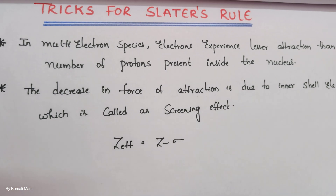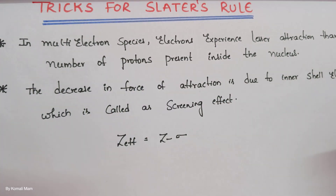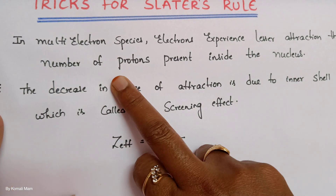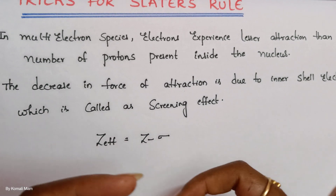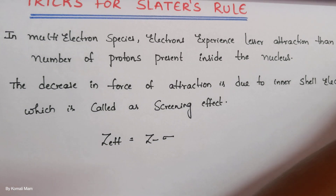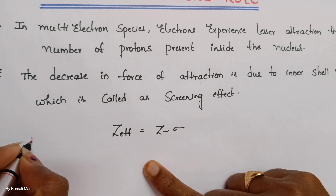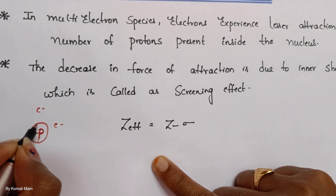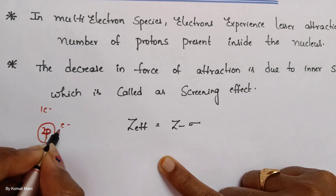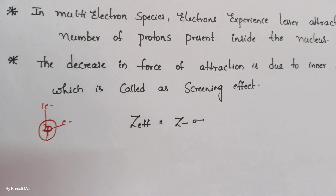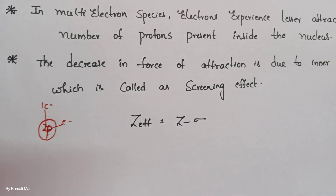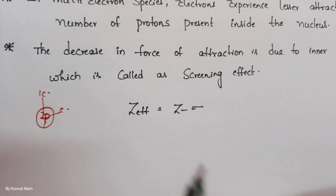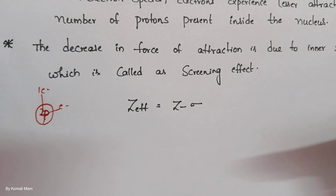What is Slater's rule? When a multi-electron species is present — having more number of electrons — what happens is that electrons experience less attraction than the number of protons present inside the nucleus. For example, consider the nucleus: one proton attracts one electron, two protons attract two electrons. But if 30 protons are there, those 30 protons should attract 30 electrons. But that is not the case whenever more number of electrons are present — those electrons start doing repulsions.